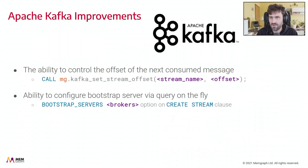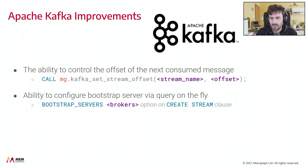On the Kafka improvement side, there is now the ability to control the offset of the next consumed message by calling the Kafka setStreamOffset procedure and providing the stream name and the offset. There is also the ability to configure the Bootstrap server via query on the fly by adding the Bootstrap server option to the createStream clause.